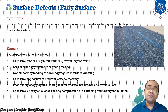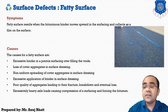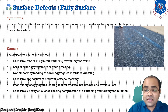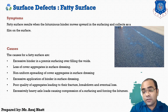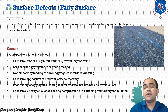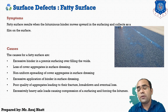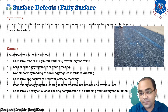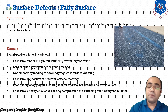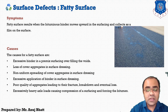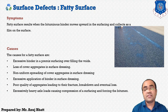In the figure, you can see this particular surface has moved in an upward direction and looks different from the existing pavement. This is the symptom that indicates a pavement has a fatty surface. Now, what are the causes — why does this happen in a particular pavement?